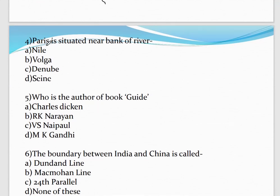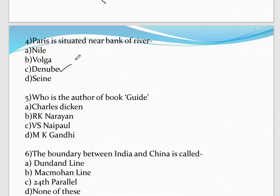Question number 4: Paris is situated on the bank of which river? Options are Nile, Volga, Danube, or Seine. The correct answer is Seine. In 2019, a previous year question asked which river London is situated on — the answer is Thames.